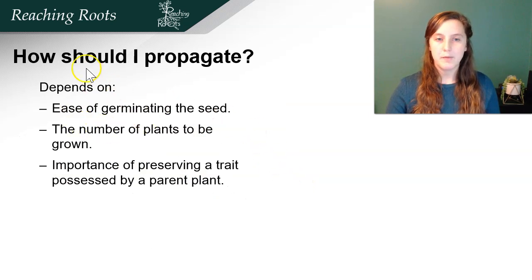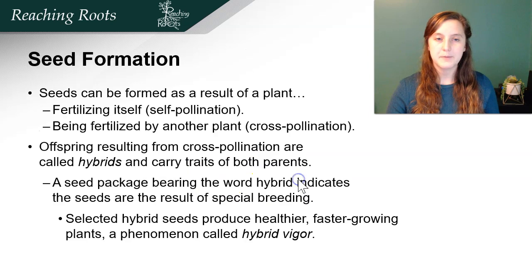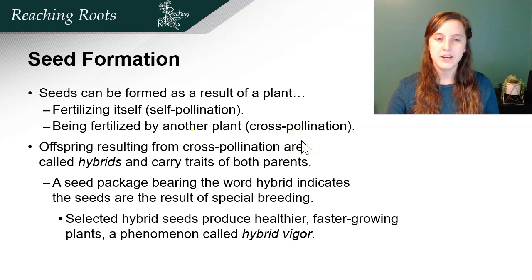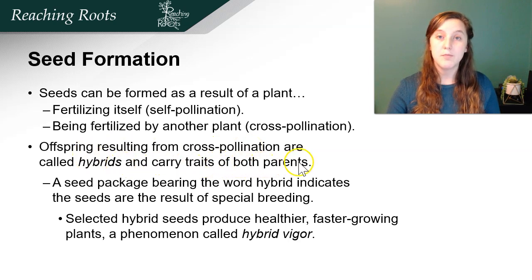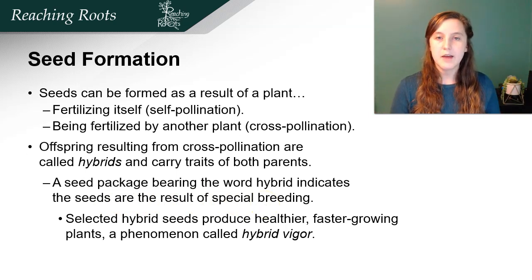So how do I decide how to propagate a specific plant? Well it depends on how easy it is to germinate that specific plant, the number of plants that you want to grow, and the importance for you to preserve a specific trait possessed by the parent plant. Seed formation can result from a plant fertilizing itself through self-pollination or being fertilized by another plant, called cross-pollination. Offspring resulting from cross-pollination are called hybrids and carry the traits of both parents. Selected hybrid seeds produce healthier, faster growing plants — a phenomenon called hybrid vigor.